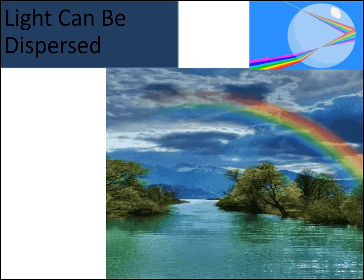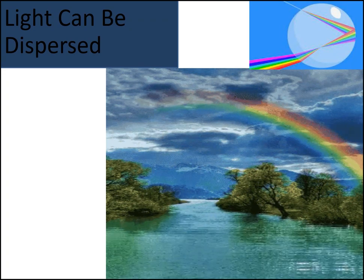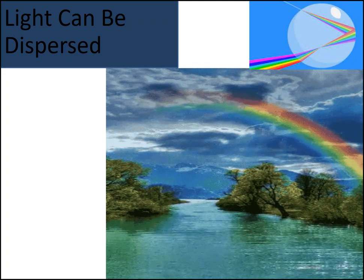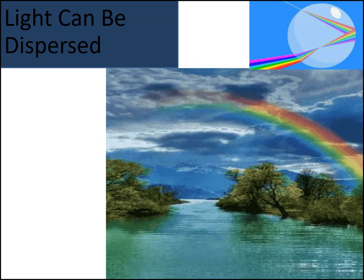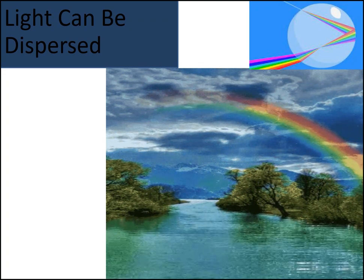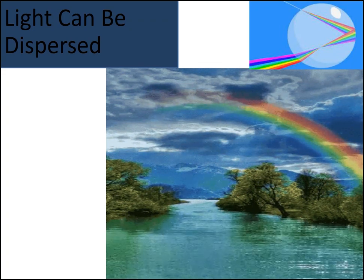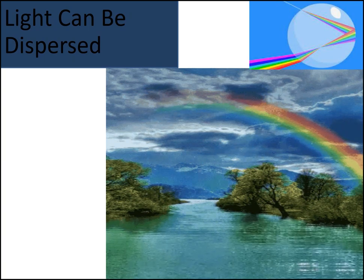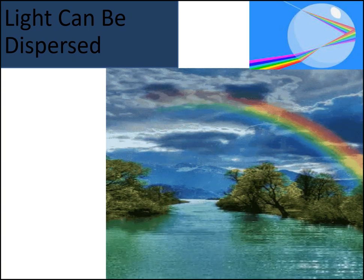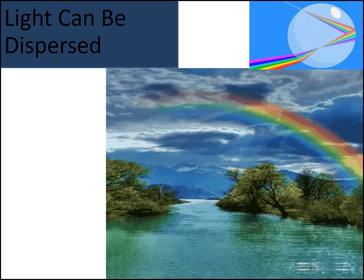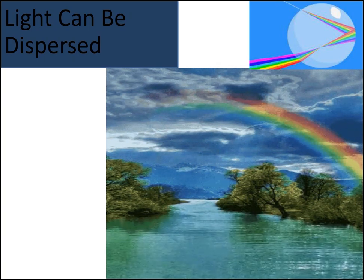Another property of light is that light can be dispersed. Light can be dispersed by water droplets in the sky to form a rainbow after rain.